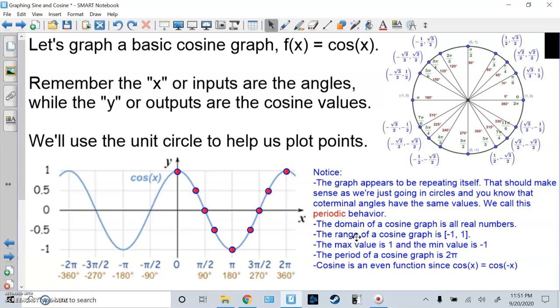Domain's all real numbers. We enter any angle in radians or degrees. Range is also negative 1 to 1, closed, because that's the highest and lowest one can go. Period is also 2 pi, because that's when it starts repeating itself. And cosine is considered even, because the cosine of x is the same as the cosine of negative x.